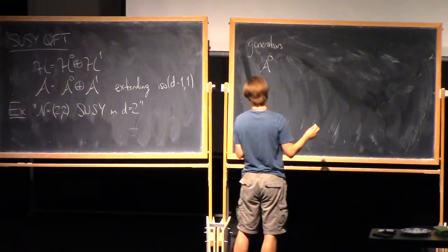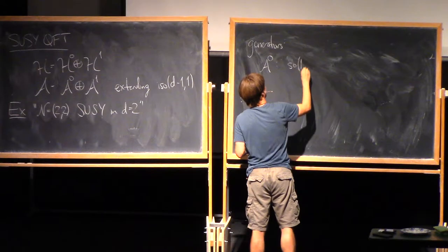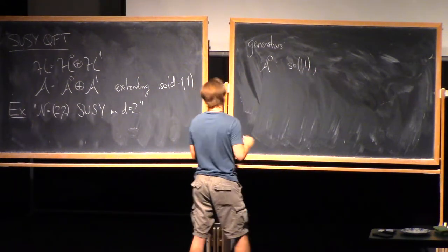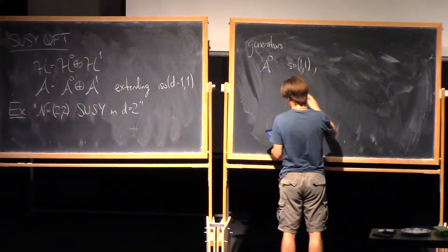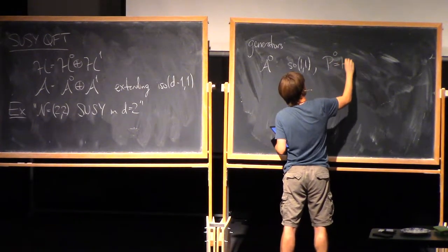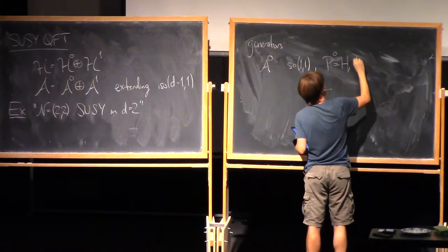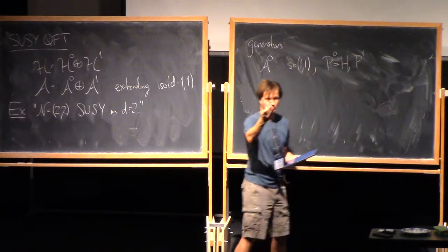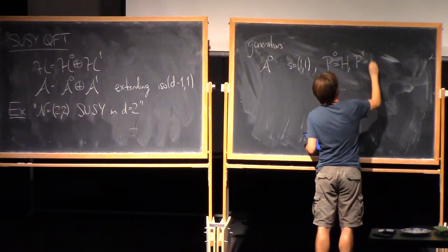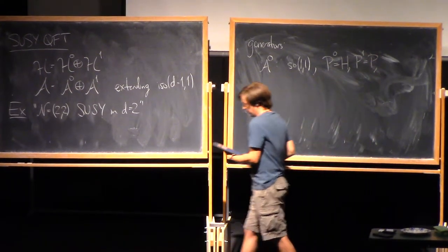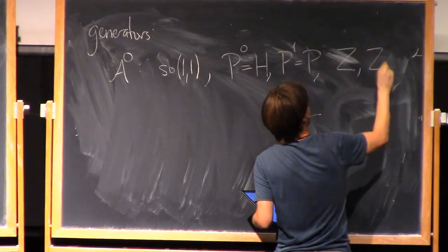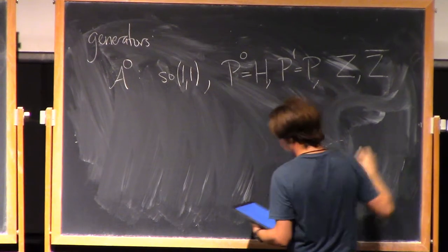For the even part A_0, we have the generators of SO(1,1) — just boosts in this case. Then we have the translations: P0, which I'll call H as usual, and in this case we just have one space dimension, so I'll call that P. And then we're going to have two new generators that I'll call Z and Z-bar — those are called the central charges.